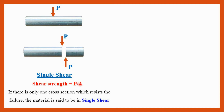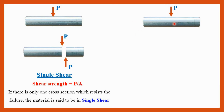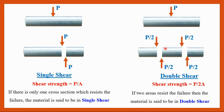The shear strength for single shear is given by P by A. Now if the same specimen is subjected to shear force but resisted by two cross sectional areas, we have resistance of P by 2 on each side. So with two cross sectional areas, the material is subjected to double shear. The shear strength of double shear is given by P by 2A, because we are having two cross sectional areas.